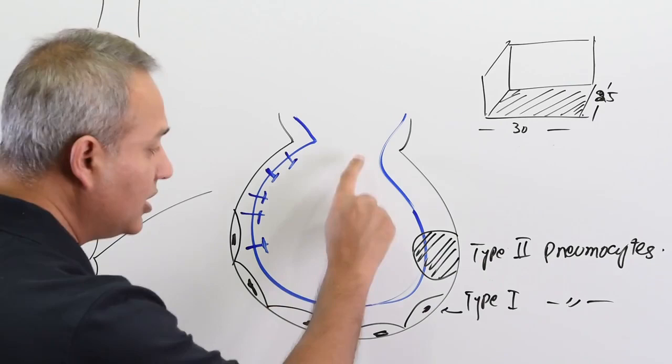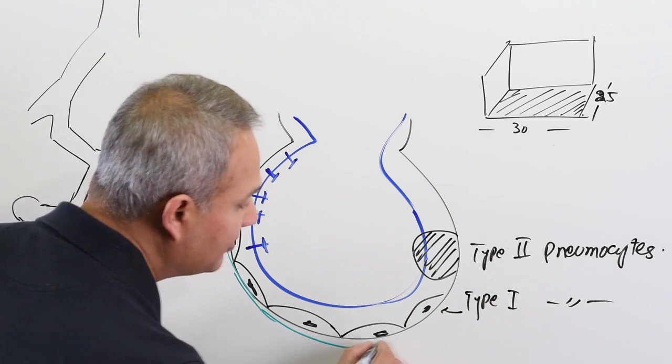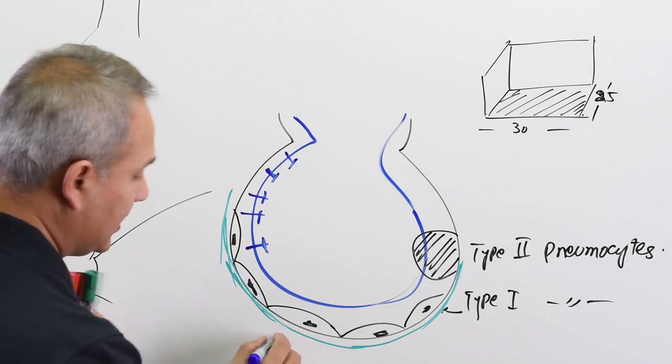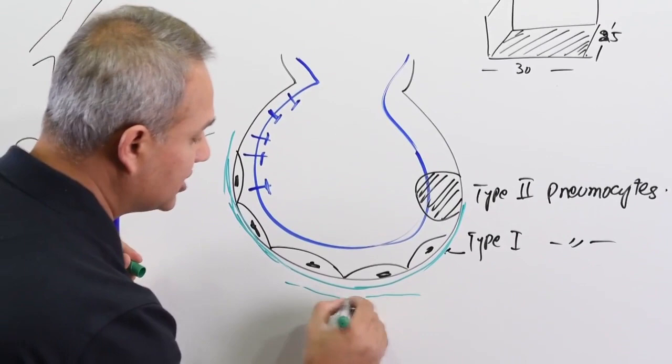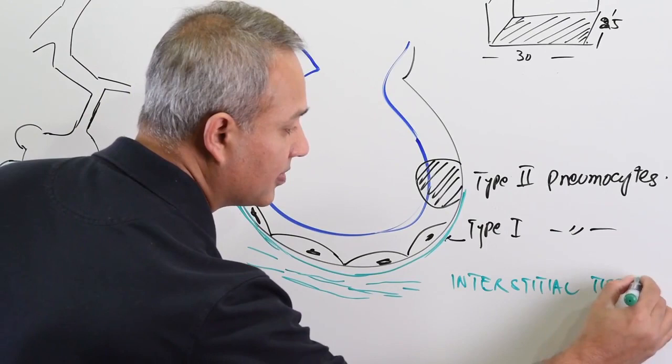Then under the pneumocyte, we know that all cells that are surface cells usually have basement membrane under them, always have basement membrane. So this is the basement membrane. Then underneath the basement membrane is the interstitial tissue. Make sure that you can differentiate between the basement membrane and the interstitial tissue. So this is the interstitial tissue.